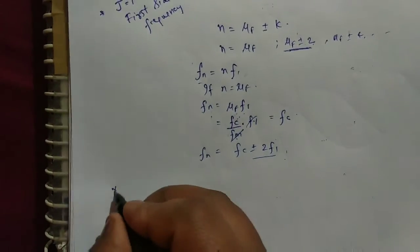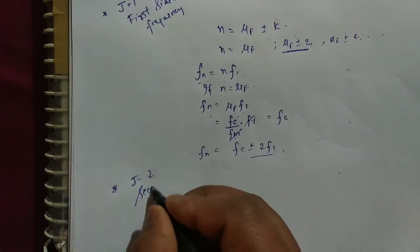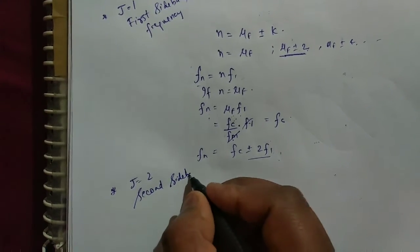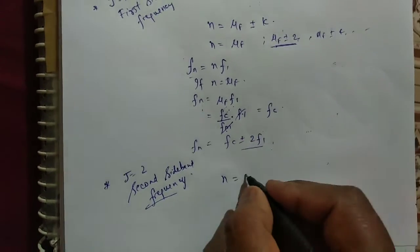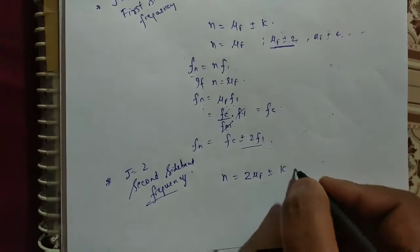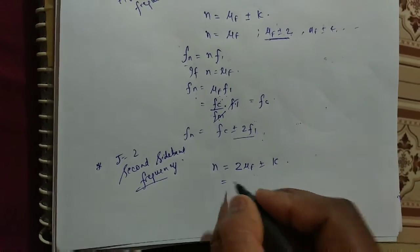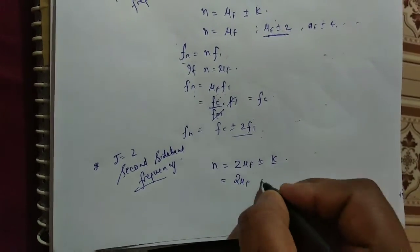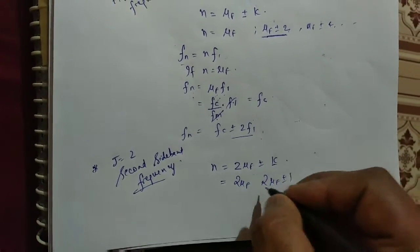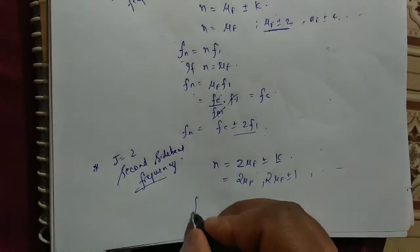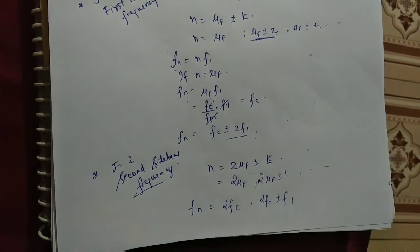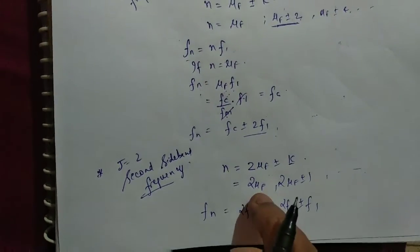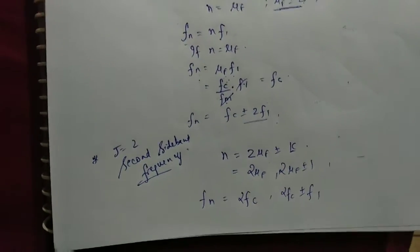So what will be the F_n? J is equal to 2, so 2μ_F plus minus K. Here μ_F, K is equal to 0, μ_F, K is equal to 1, μ_F plus minus 1, like this. So F_n in this case is 2F_C, 2F_C plus minus F1. We can find this by this way only - put the value of μ_F, we can find this.